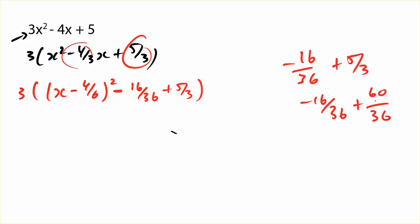So negative 16 plus 60 should give me 44. So we should get 3, x. Now this can be simplified to 2 thirds, squared, plus 44 over 36.